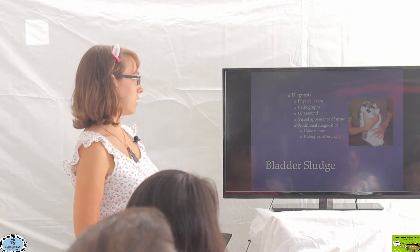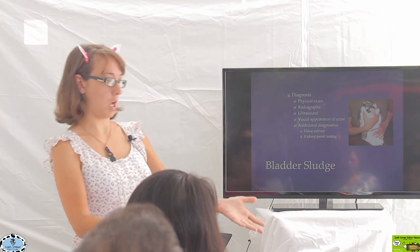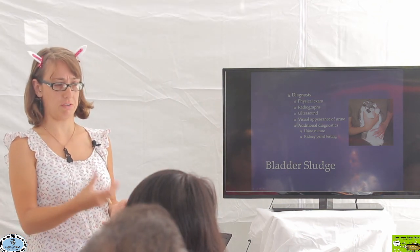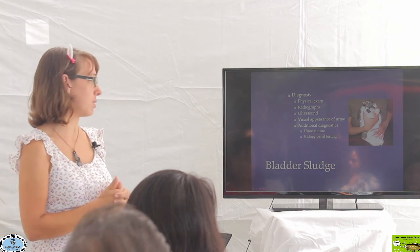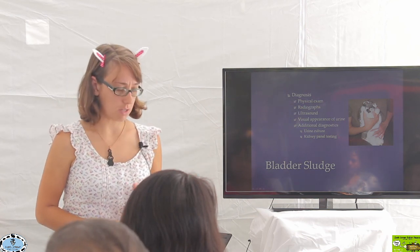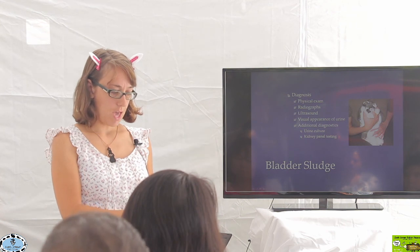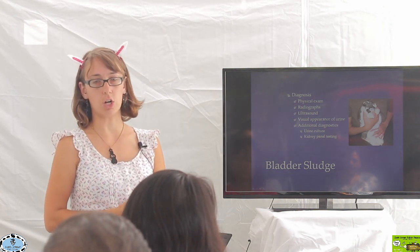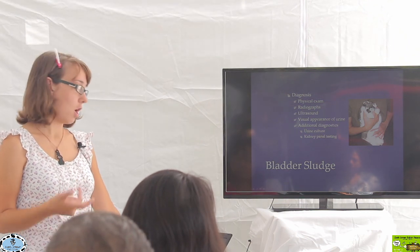Diagnosis of bladder sludge starts with physical exam and history — straining to urinate, visible sludge in urine, or even palpating a firm sandbag-like bladder during abdominal exam. Radiographs are most helpful. Ultrasound can also be used. Additional diagnostics may include urine culture to check for infection and bloodwork to assess kidney function.